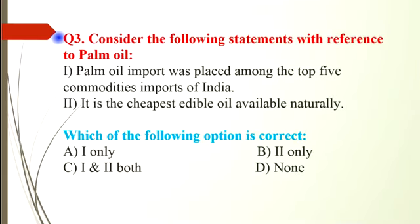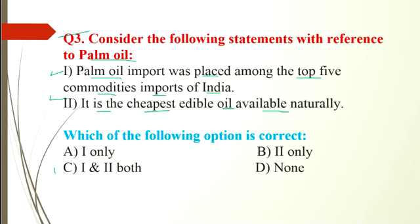Question number 3 is with reference to palm oil. Statement 1: palm oil import is placed among the top 5 commodity imports of India. Statement 2: it is the cheapest edible oil available naturally. Both statements are correct. So the answer is option C.